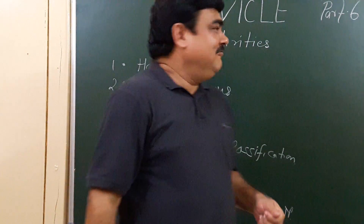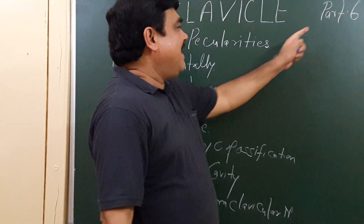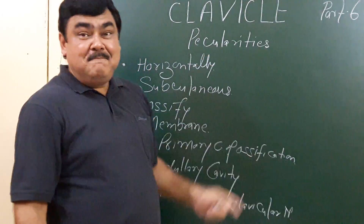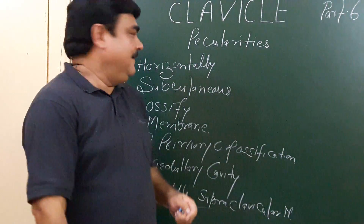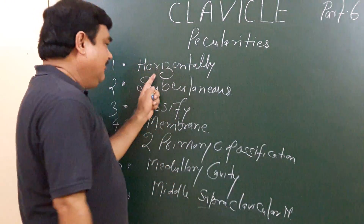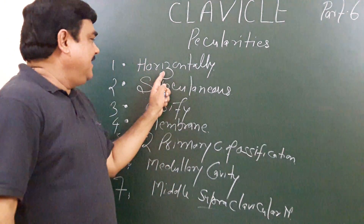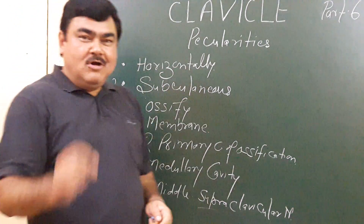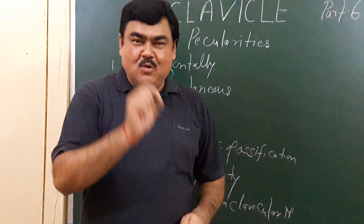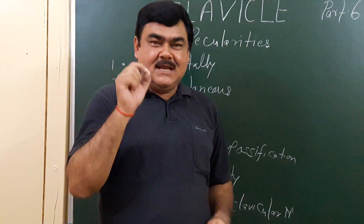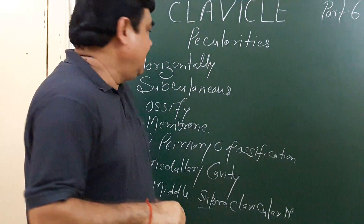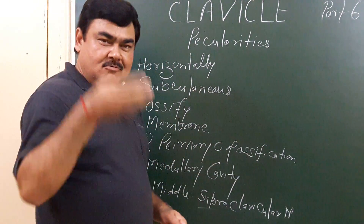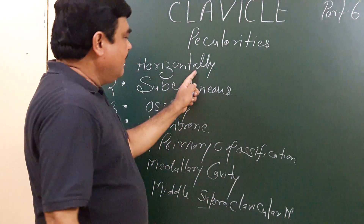Now we will discuss Part 6 of the clavicle — the peculiarities of the clavicle. The first peculiarity is that it is the only long bone which lies horizontally. Other long bones are vertically present; this is the only long bone which lies in the horizontal plane.